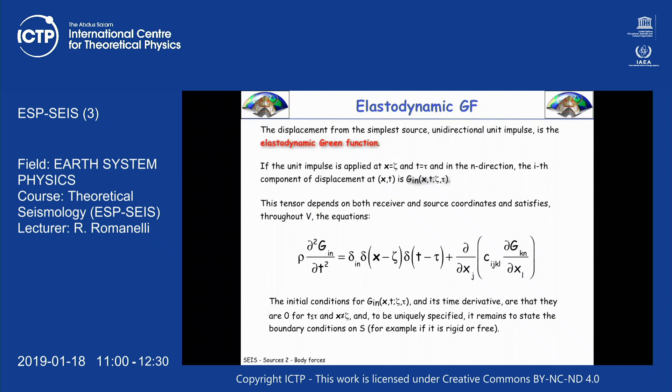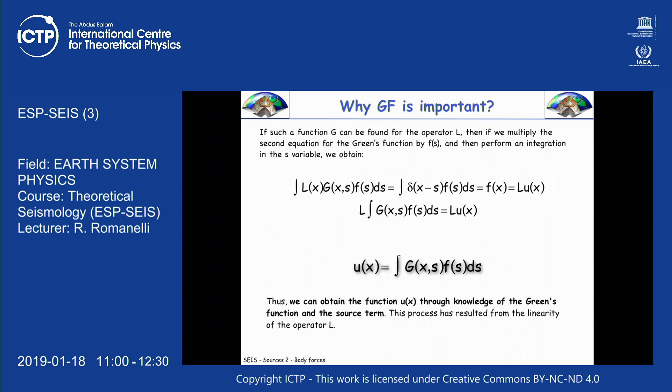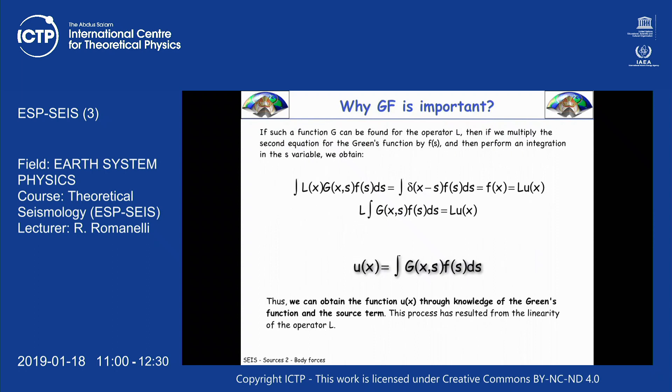If you want to be a bit more sophisticated: two indexes, it's a tensor — position of receiver, position of source. This is just a definition. We have not solved this problem yet; we've given a name G to the solution. And you can imagine that the solution is a property of a medium. If I take an infinite, elastic, homogeneous medium I get one answer; if the system is more complicated, I get a different answer.